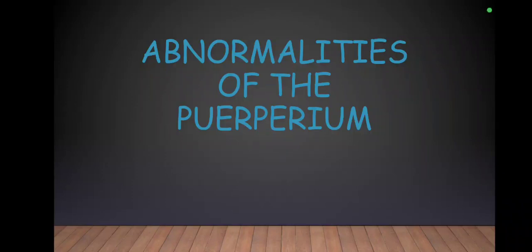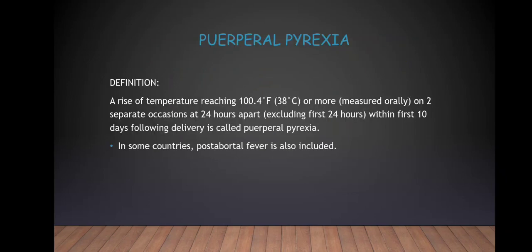Hello everyone, today we will be discussing abnormalities of the puerperium. We will start with puerperal pyrexia, which is defined as a rise of temperature reaching 100.4 degrees Fahrenheit or 38 degrees Celsius or more, measured orally on two separate occasions at 24 hours apart.